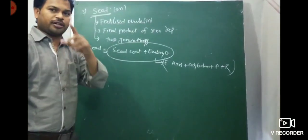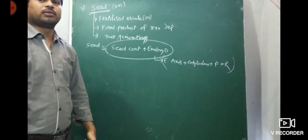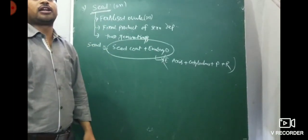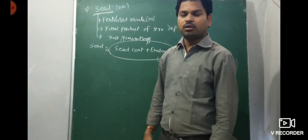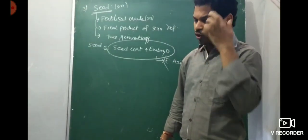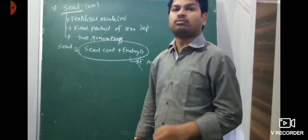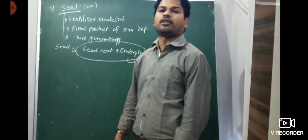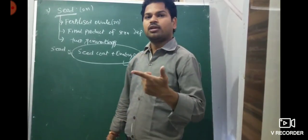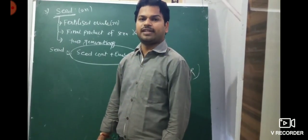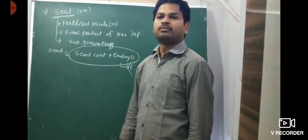Outer integument develops into testa; inner integument develops into tegmen. Micropyle is a small pore-like structure present in the ovule. After fertilization, micropyle develops into the micropyle of the seed, which facilitates the entry of oxygen and water. This is also a theory question: define micropyle and state its function.